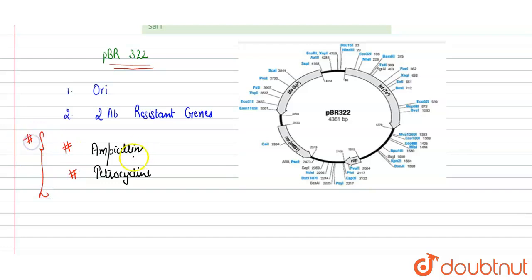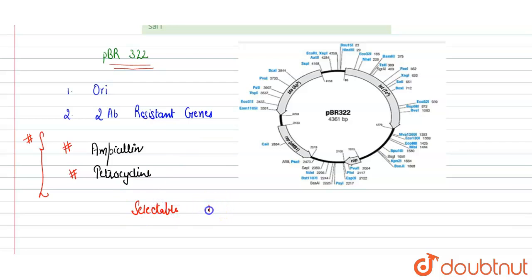If the recombinant has ampicillin resistance and the ampicillin gene is disrupted by inserting foreign DNA, it will no longer remain resistant to ampicillin. In this way, these genes act as selectable markers for finding the recombinant DNA from the non-recombinant in a culture or medium.